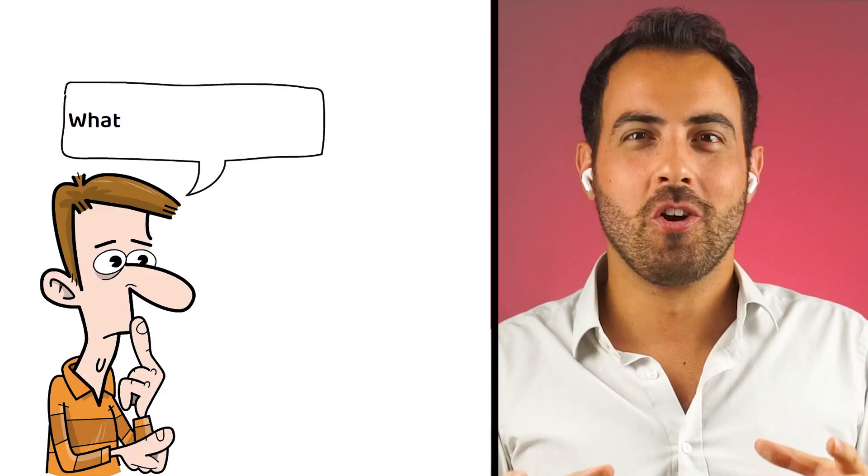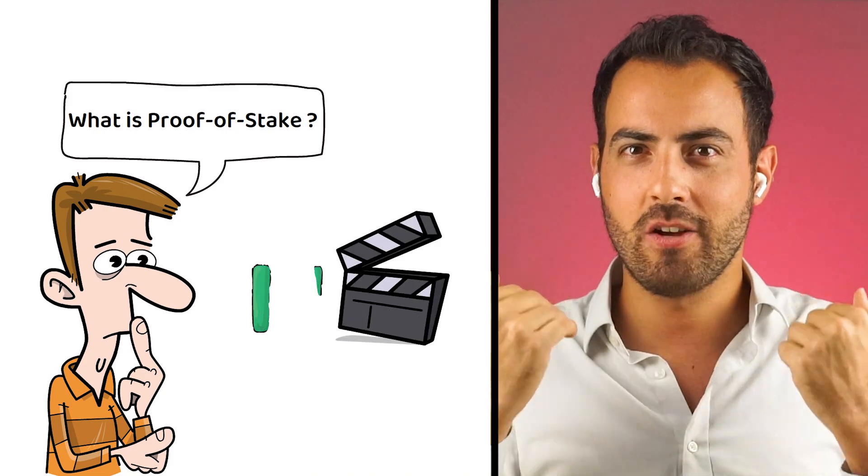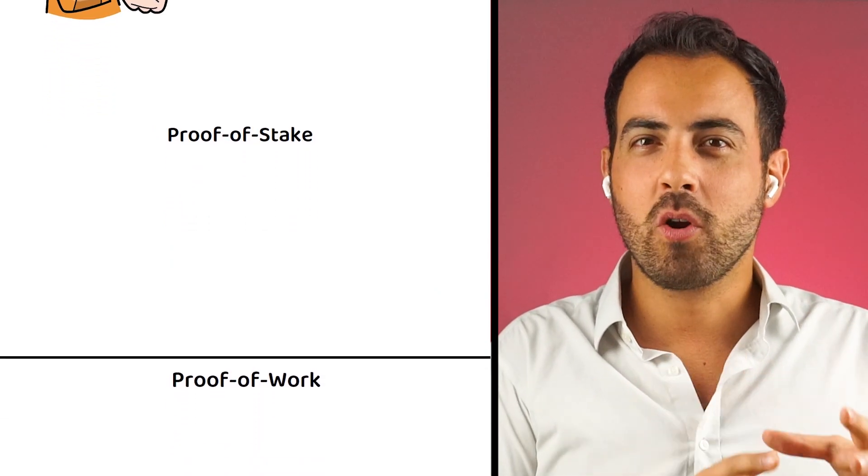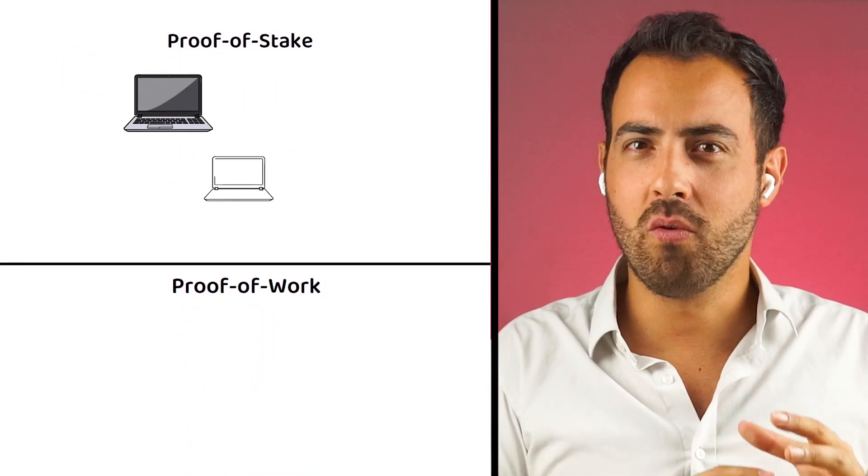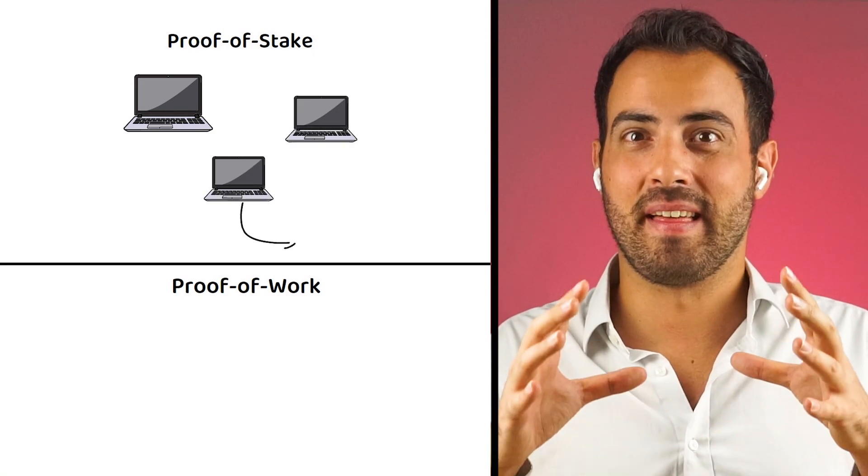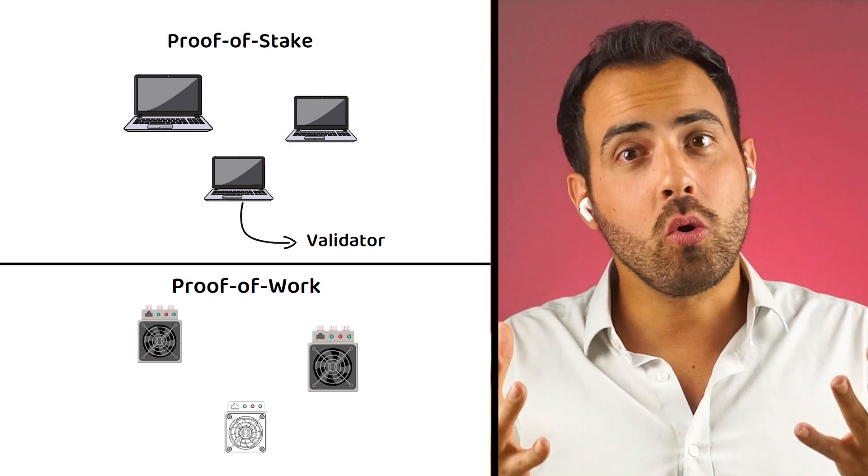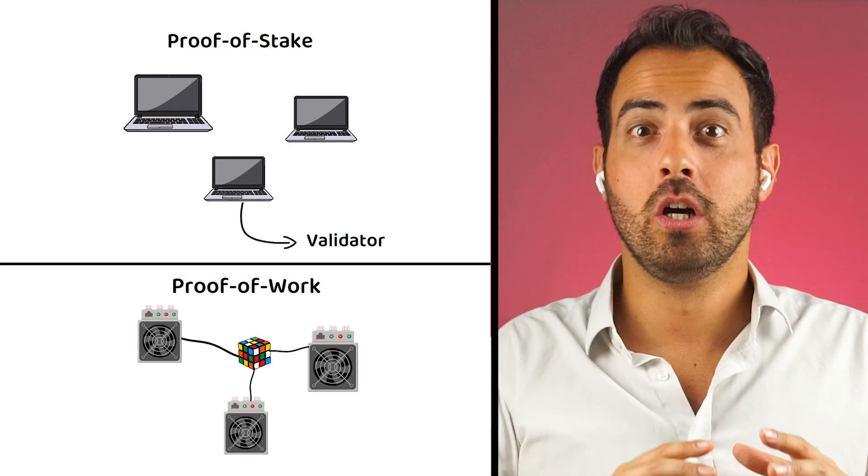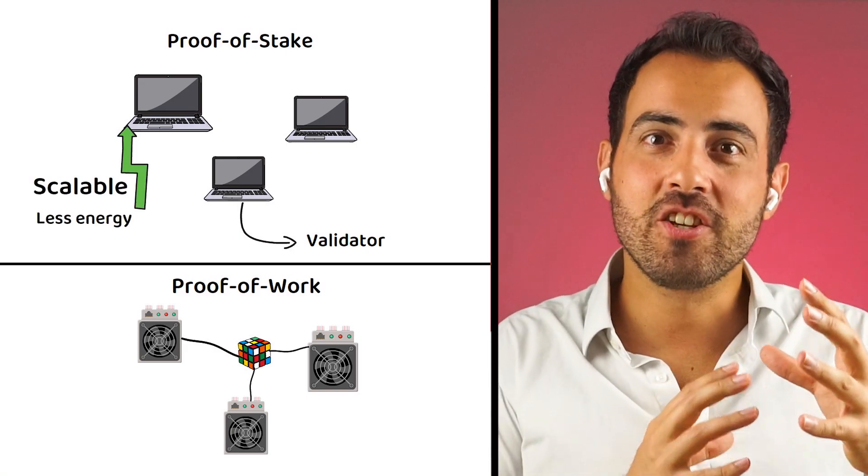I have talked about proof of stake many times before, so I will leave a couple of links in the description to our previous videos if you would like a little more depth. But to keep it brief, proof of stake, unlike proof of work, relies on a few validators rather than making half the network compete to solve a puzzle to confirm their transactions. This allows the network to scale bigger without massively increasing its energy consumption.